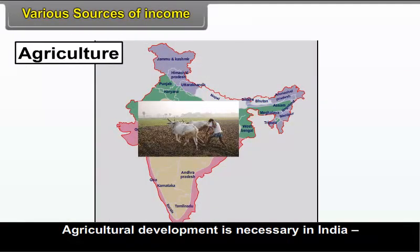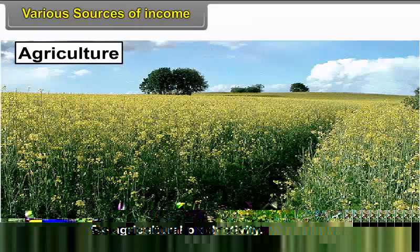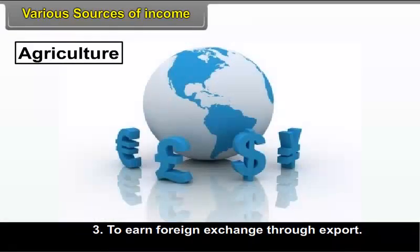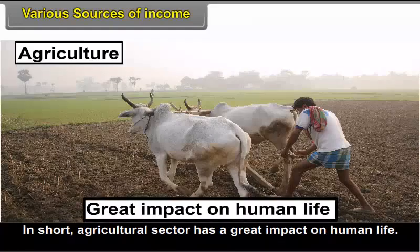Agricultural development is necessary in India to increase agricultural productivity, to create employment opportunities, to earn foreign exchange through export, and to supply raw materials for industries. In short, the agricultural sector has a great impact on human life. The origin of this traditional agriculture is found in the Baluta system.